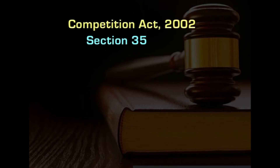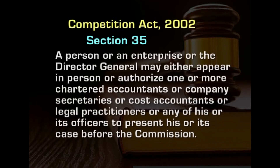The language of section 35 is as follows: a person or an enterprise or the director general may either appear in person or authorize one or more chartered accountants, company secretaries, cost accountants, or legal practitioners or any of his or its officers to present his or its case before the commission. Permission is given for four kinds of practitioners to appear: one is chartered accountants, two is company secretaries, three is cost accountants, four is legal practitioners.